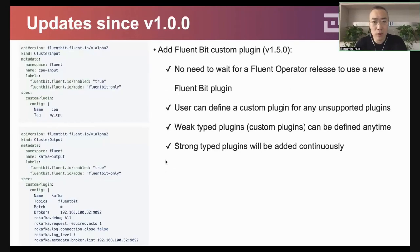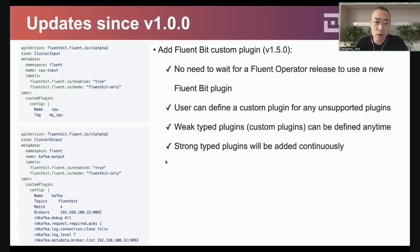Another important improvement in 1.5 is that we finally added the Flimbit custom plugin. Flimbit now has nearly 100 plugins, making it almost impossible or unreasonable to modify the code and release a new version of the Flimbit operator for every new plugin requirement. So if the user wants to use an unsupported plugin, they can simply define one custom plugin section in existing input, filter, or output CRDs.